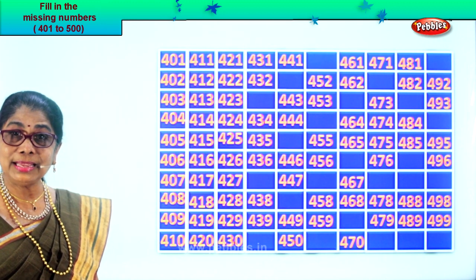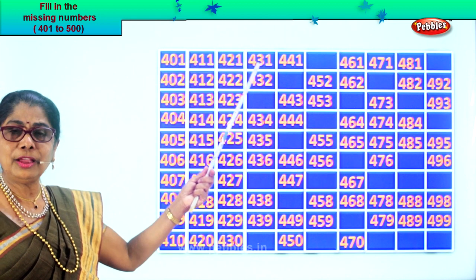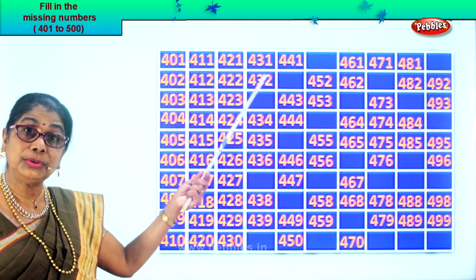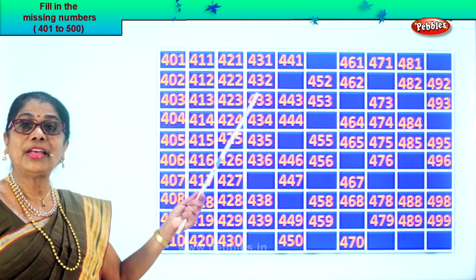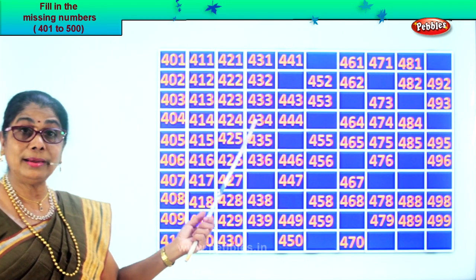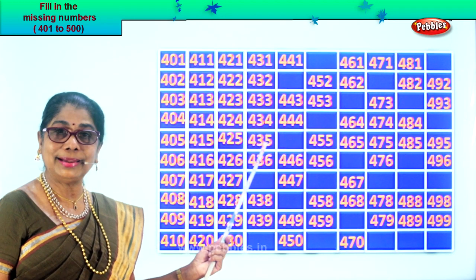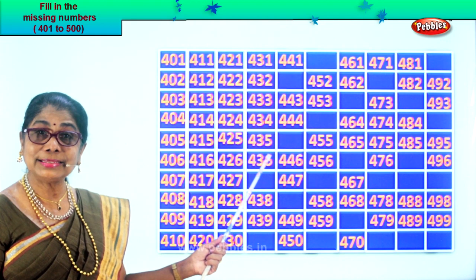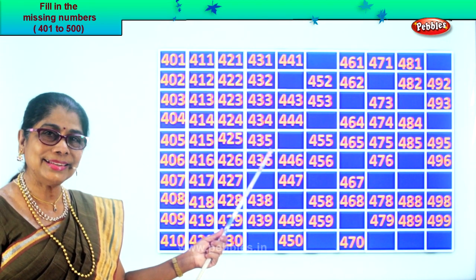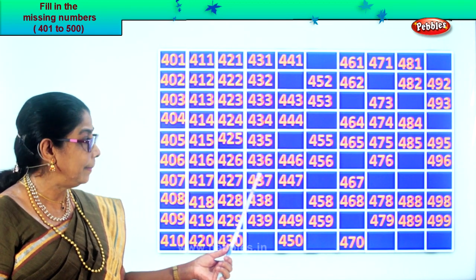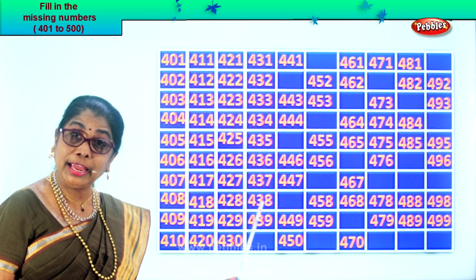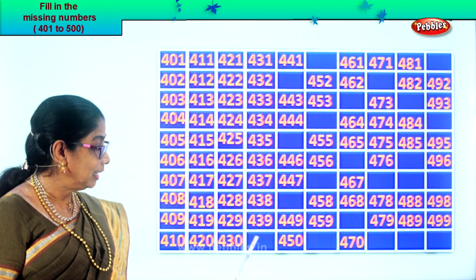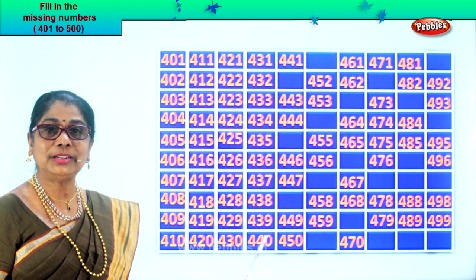After 30 comes 31 — four hundred thirty-one. Four hundred thirty-two. After 2 comes 3, after 32 comes 33, so four hundred thirty-three, four hundred thirty-four, four hundred thirty-five, four hundred thirty-six. After 6 comes 7, after 36 comes 37 — four hundred thirty-seven, four hundred thirty-eight, four hundred thirty-nine. After 9 comes 10, after 39 comes 40 — so four hundred forty.